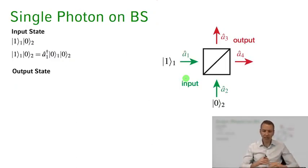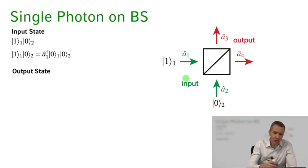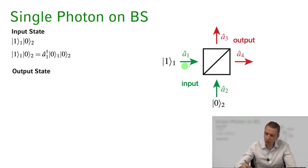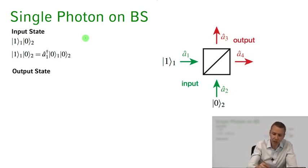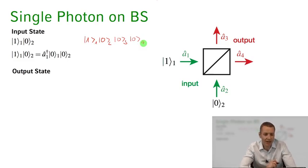Let's put a simple state of light onto this beam splitter — one single photon in mode 1 and see what we measure at the output ports 3 and 4. The input state is one photon in mode 1 and zero photons (vacuum) in mode 2. Writing the full state including the output modes: |1⟩₁ |0⟩₂ |0⟩₃ |0⟩₄. The shorthand notation is just |1⟩₁ |0⟩₂, and we know that the state of having one photon in mode 1 is just the creation operator in mode 1 acting on the vacuum.